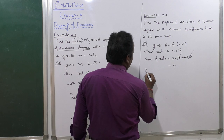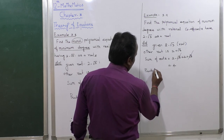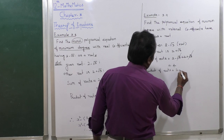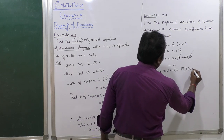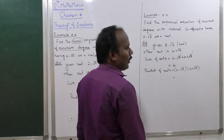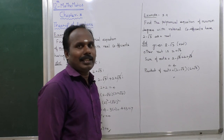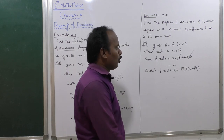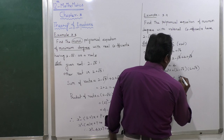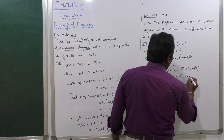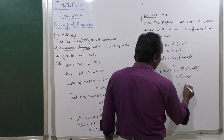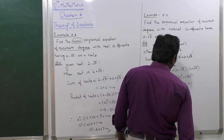The product of roots equals (2 minus root 3) multiplied by (2 plus root 3). Using the formula (a minus b)(a plus b) equals a squared minus b squared, where a equals 2 and b equals root 3, we get 2 squared minus (root 3) squared, which is 4 minus 3, equal to 1.